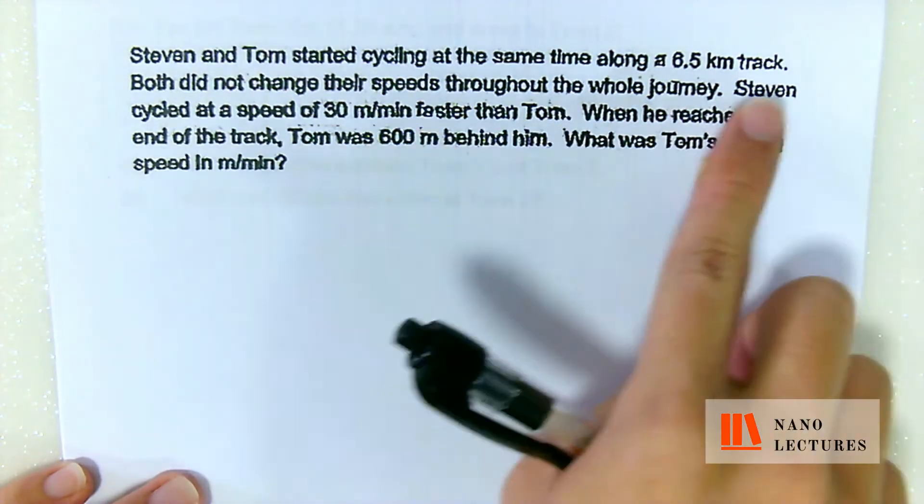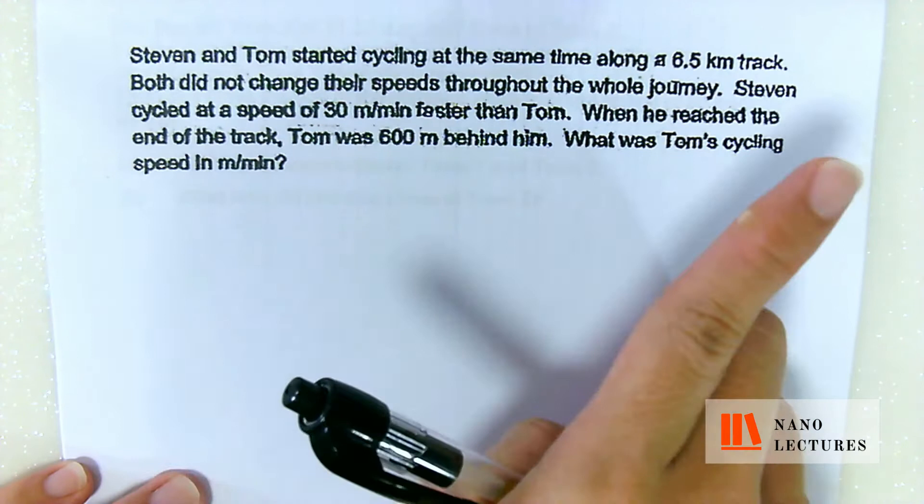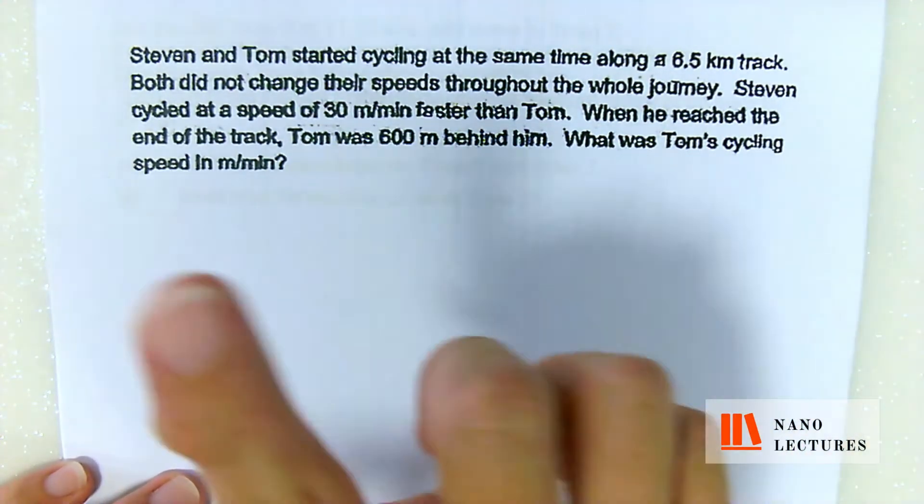Which means that every single minute, Steven should be 30m ahead of Tom, and then more: 60, 90, 120.